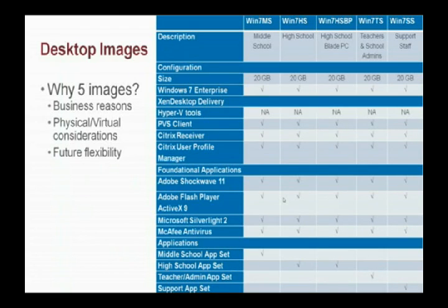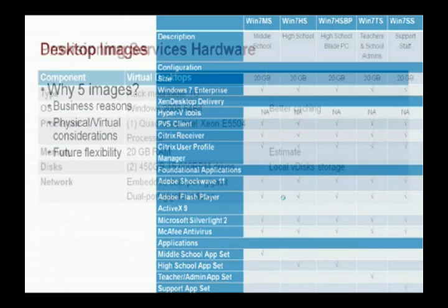The other reason was the Win 7 HSBP — the Windows 7 High School Blade PC virtual desktop. We could have combined that with the Windows 7 High School desktop; it would have worked fine using what's called a common image. But the reason we didn't is because the Windows 7 High School desktop would be on a hypervisor — Hyper-V — while the Blade PC would be on the physical Blade PC device. We decided to separate them due to the physical versus virtual considerations. You could combine them — I've seen it done — but for this use case it was decided to keep them separate to make it easier within the environment.